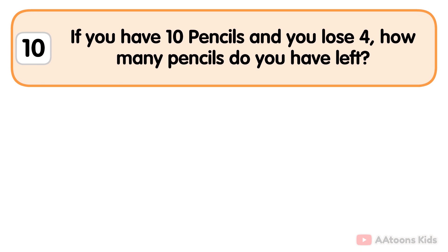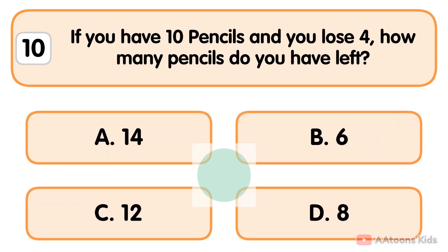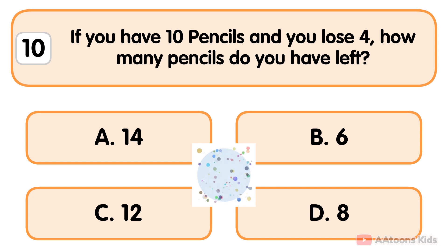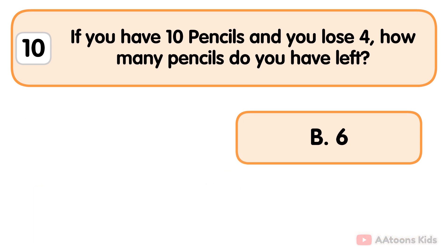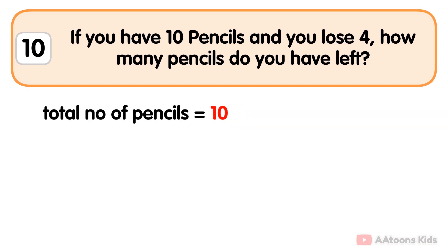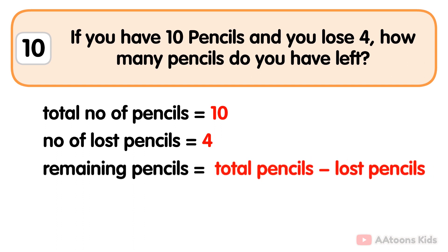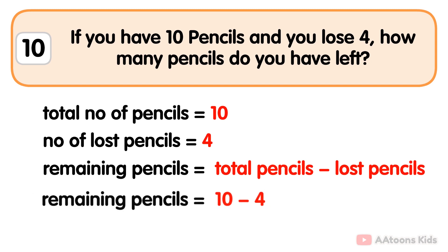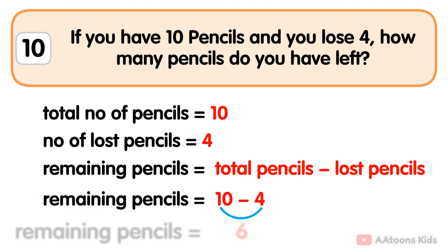If you have 10 pencils and you lost 4, how many pencils do you have left? 6. The total number of pencils is 10, the number of lost pencils is 4. To find the remaining pencils, simply subtract: the total number of pencils, 10, minus the number of lost pencils, 4, is 6. So you have 6 pencils left.